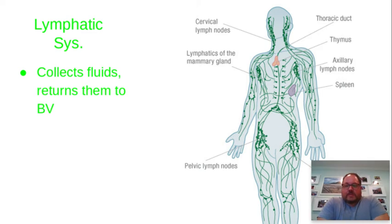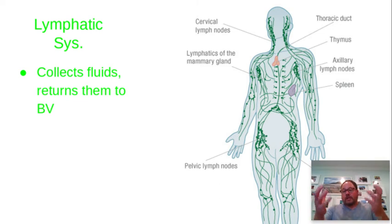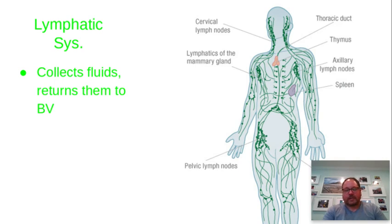Your lymphatic system is one that people often overlook — it's sort of like the sewer system of the body. You have 60,000 miles of blood vessels transporting blood, but it's a leaky system, so you're constantly having fluid leak out of your circulatory system. To collect that fluid, you have another set of tubes called lymphatic vessels that collect it and send it back to your circulatory system. It does some other things along the way that we'll talk about next semester.